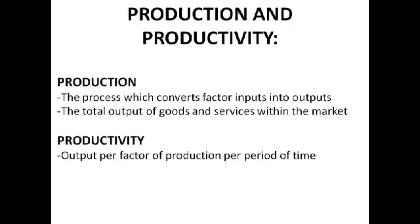Production and productivity — it's really important not to get these two mixed up, like a lot of people do. Production is the process which converts factor inputs into outputs, and it might also be considered the total output of goods and services within the market. Productivity is output per factor of production per period of time. You get lots of different types of factor productivity — pretty much all the factors of production except enterprise — so land, labour, and capital.